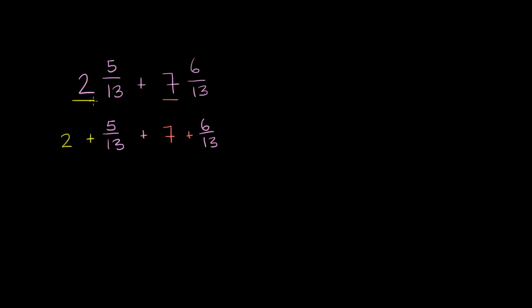So all I did is I rewrote this and I essentially expanded out. I broke up the mixed numbers into their whole number parts and their fractional parts. And then what I like to do is I like to add the whole number parts. So this 2 plus this 7. So I'll do the 2 plus 7 over here. I'll add those up.